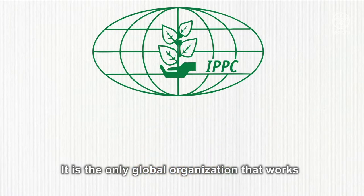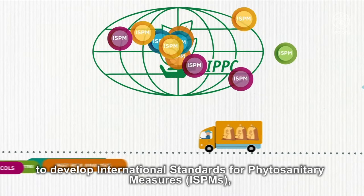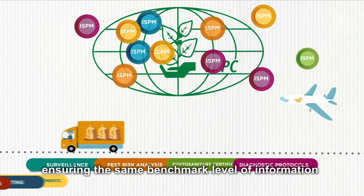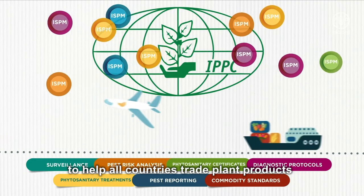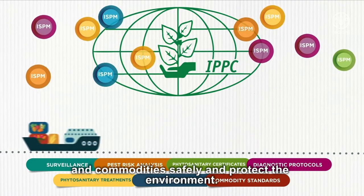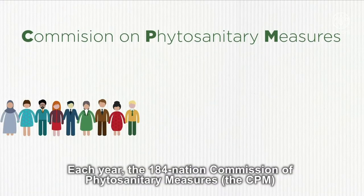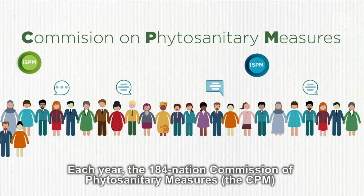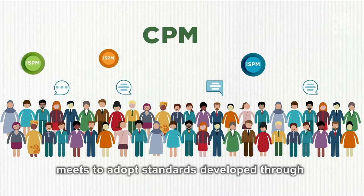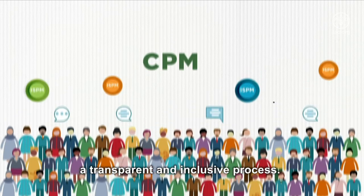It is the only global organisation that works to develop international standards for phytosanitary measures, ensuring the same benchmark level of information to help all countries trade plant products and commodities safely and protect the environment. Each year, the 184-nation Commission of Phytosanitary Measures meets to adopt standards developed through a transparent and inclusive process.